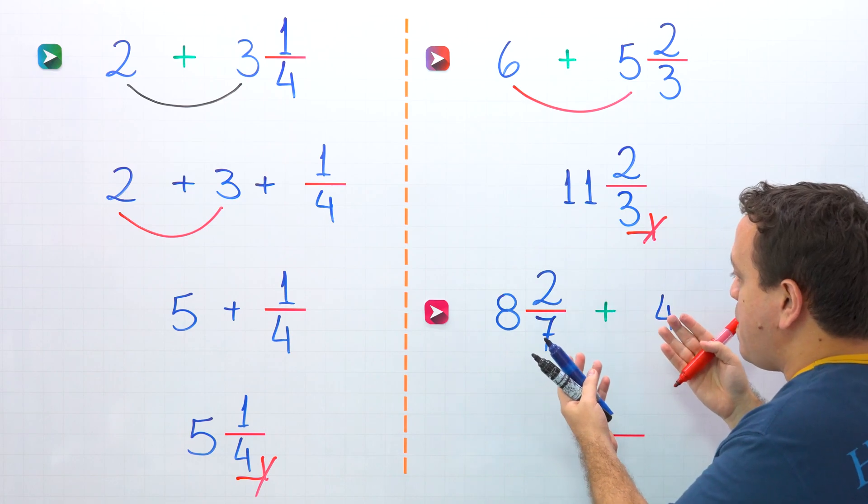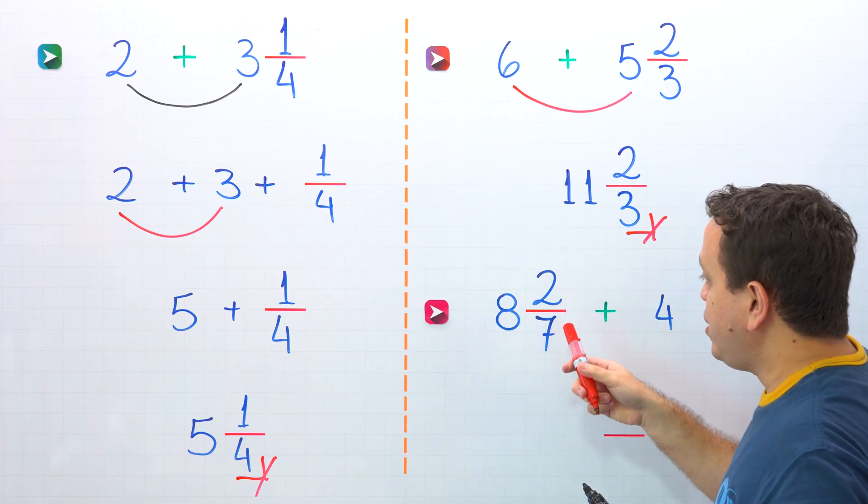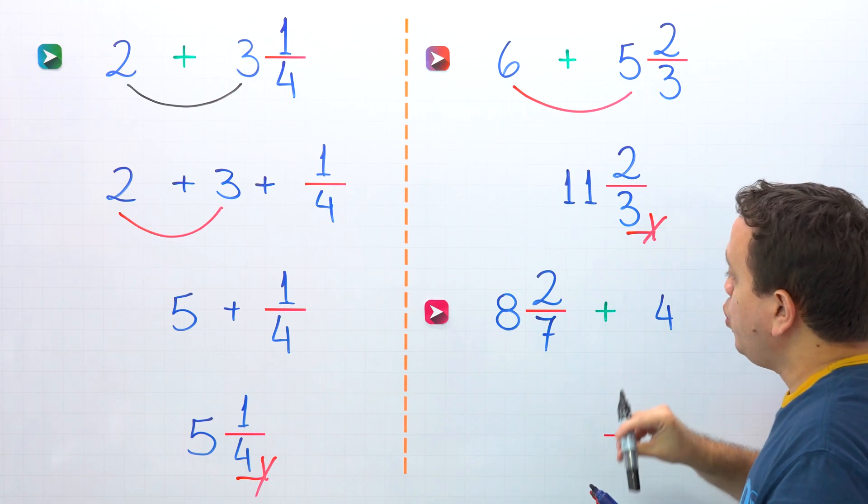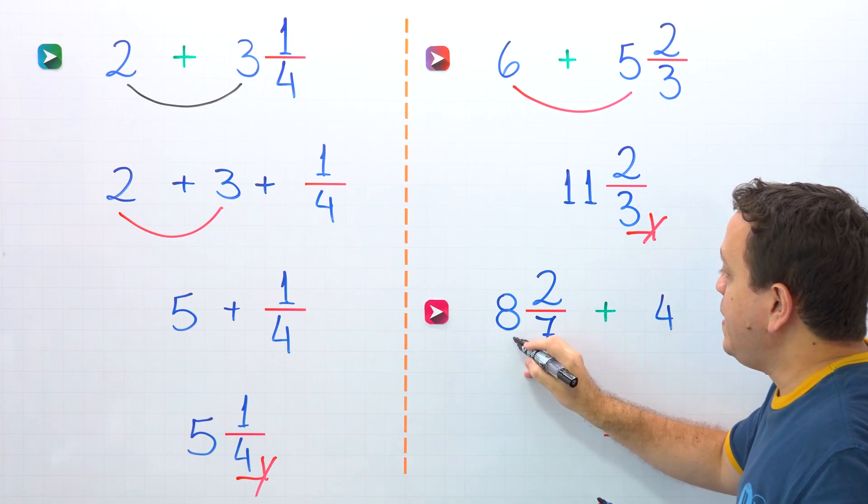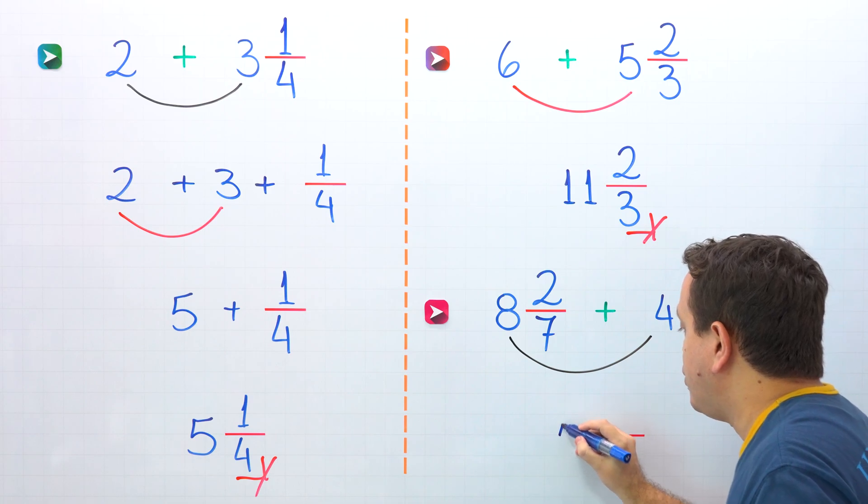Let's move on to the last example. Here, we need to find the sum of 8 and 2 sevenths and 4. With the quick method, we'll start by adding the whole numbers. 8 plus 4 give us 12.